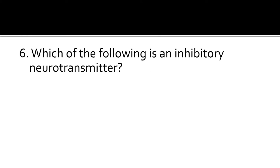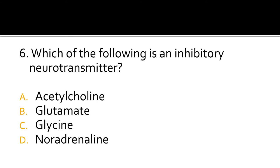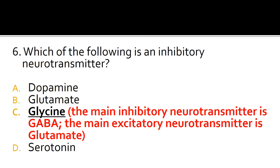Question 6. Which of the following is an inhibitory neurotransmitter? Acetylcholine, glutamate, glycine, or noradrenaline? The correct answer is C, glycine. The other inhibitory neurotransmitter is GABA, which is the main inhibitory neurotransmitter. The main excitatory neurotransmitter is glutamate.